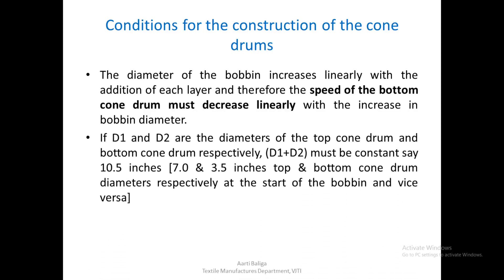If D1 and D2 are the diameters of the top and bottom chondroms respectively, then D1 plus D2 must be constant — say 10.5 inches. The top chondrom and the bottom chondrom at both ends are 7 and 3.5 inches respectively. So the total would be 7 plus 3.5 on one end and 3.5 plus 7 on the other, adding to 10.5 inches.